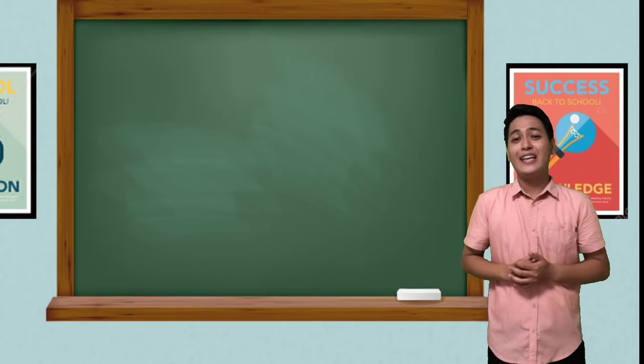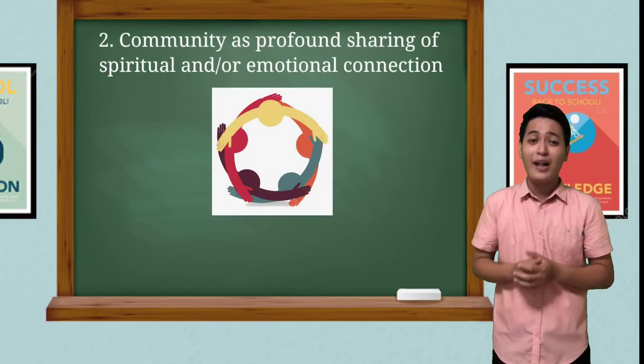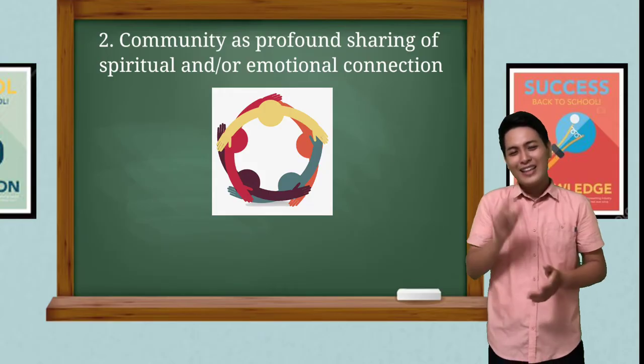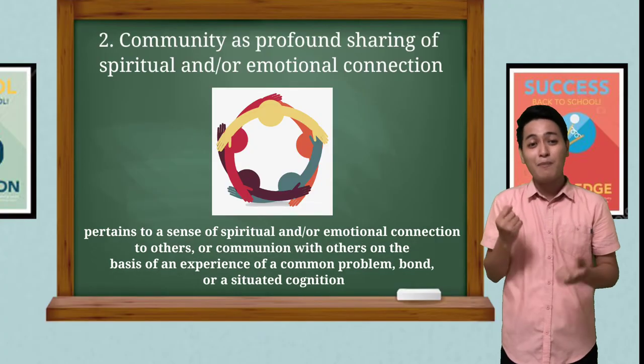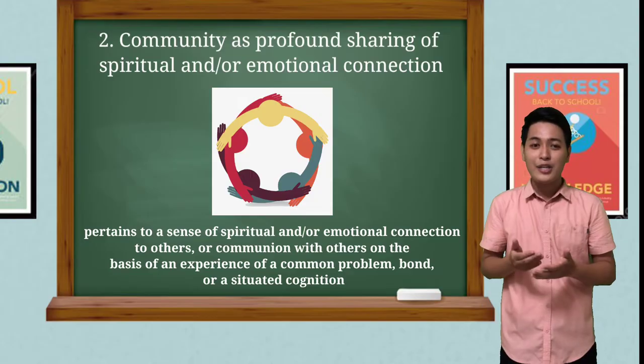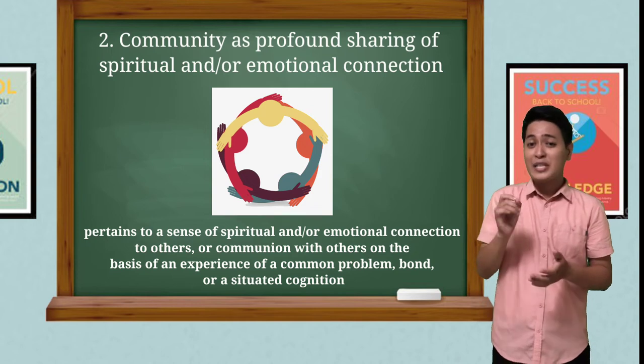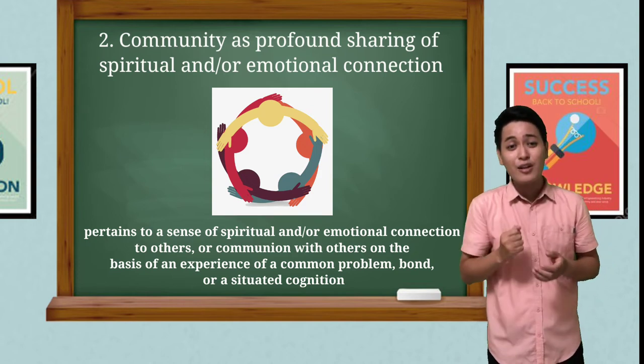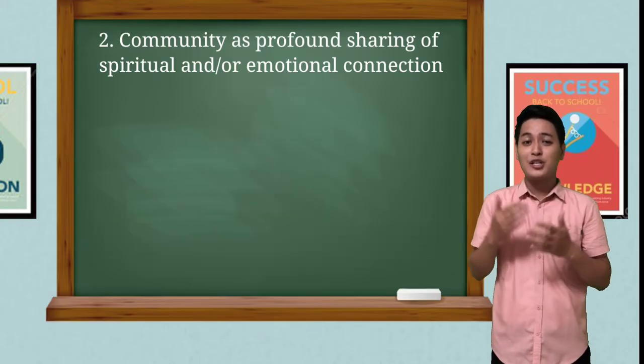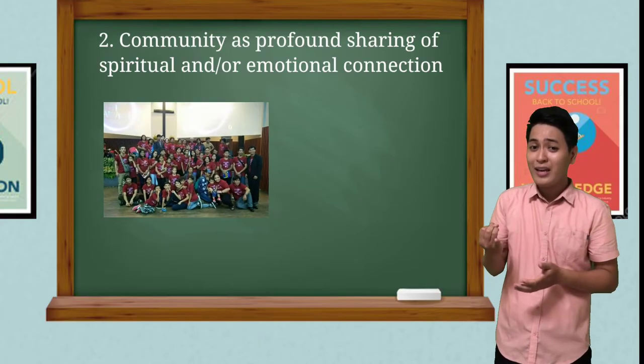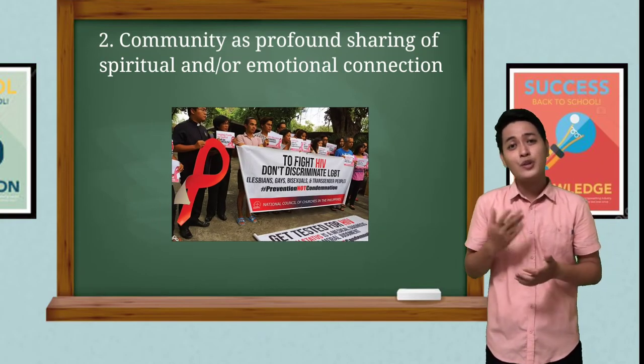And the third common notion in defining community is community as profound sharing of spiritual and/or emotional connection. This understanding of community pertains to a sense of spiritual and/or emotional connection to others or communion with others on the basis of an experience of a common problem, bond, or a situated cognition. So, this notion of community is the most transcendent of the three. Examples of such communities are brethren community, community of disaster survivors, and a community living with HIV, to name a few.